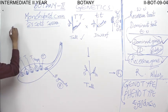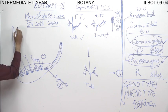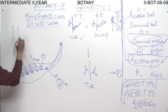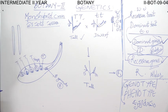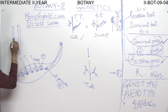These are the homologous chromosomes. This is one homologous chromosome, and this is the centromere position.